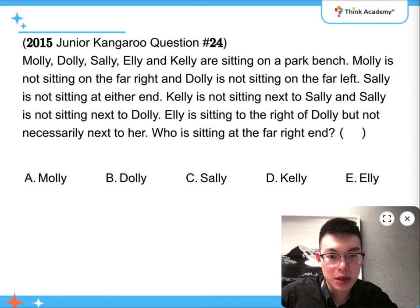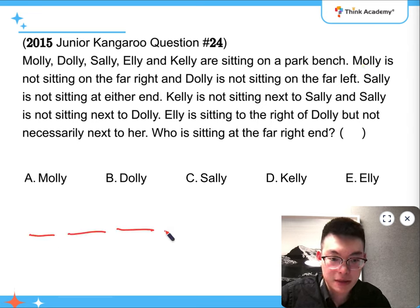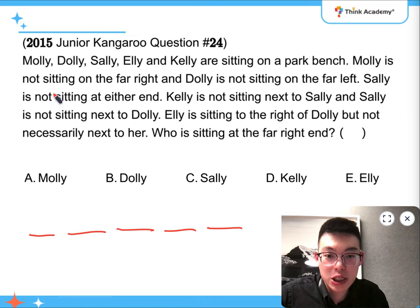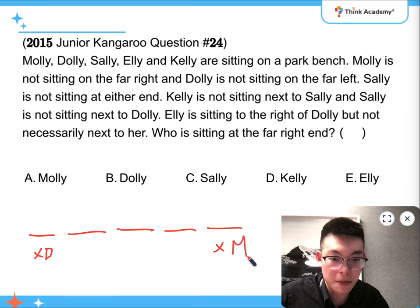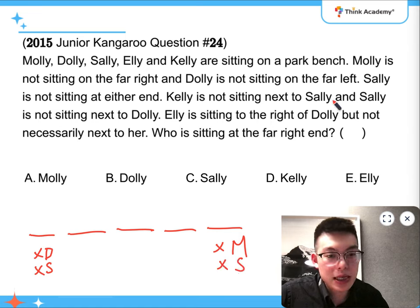So, question number 24. Molly, Dolly, Sally, Ellie, and Kelly are sitting on a park bench. So five positions. Molly is not sitting on the far right, and Dolly is not sitting on the far left. So this is not Dolly, this is not Molly. Sally is not sitting at either end, so both of them are not Sally either. Kelly is not sitting next to Sally, and Sally is not sitting next to Dolly.